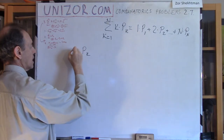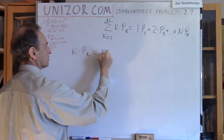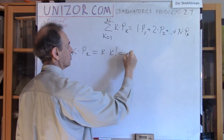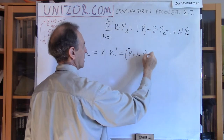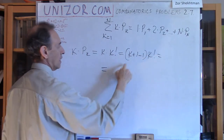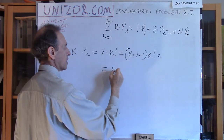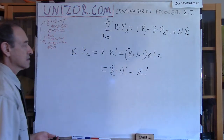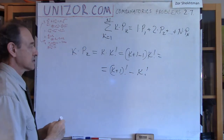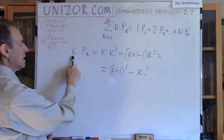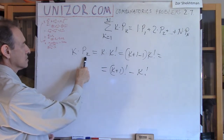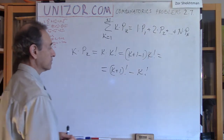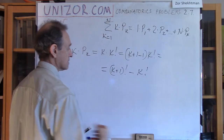What is this technique in this particular case? Well, k times Pₖ is k times k factorial. Instead of k, I put (k plus 1) minus 1, times k factorial. (k plus 1) times k factorial is (k plus 1) factorial. So k times Pₖ equals (k plus 1) factorial minus k factorial. That's the representation I was looking for.